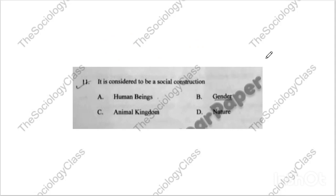Question eleven: 'It is considered to be a social construction' — human beings, gender, animal kingdom, or nature? The correct answer is B — gender.